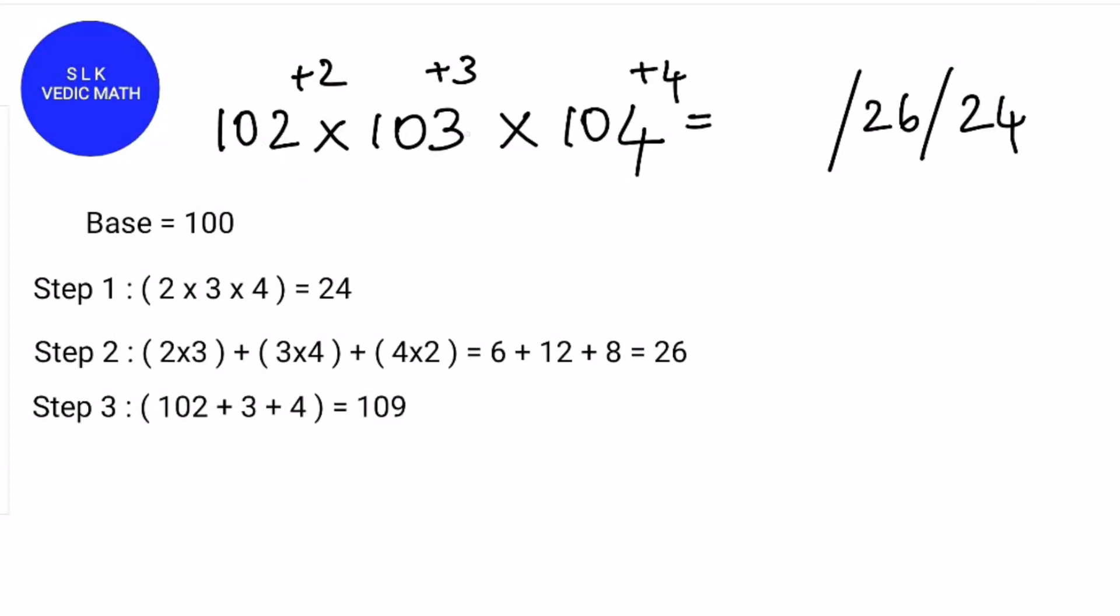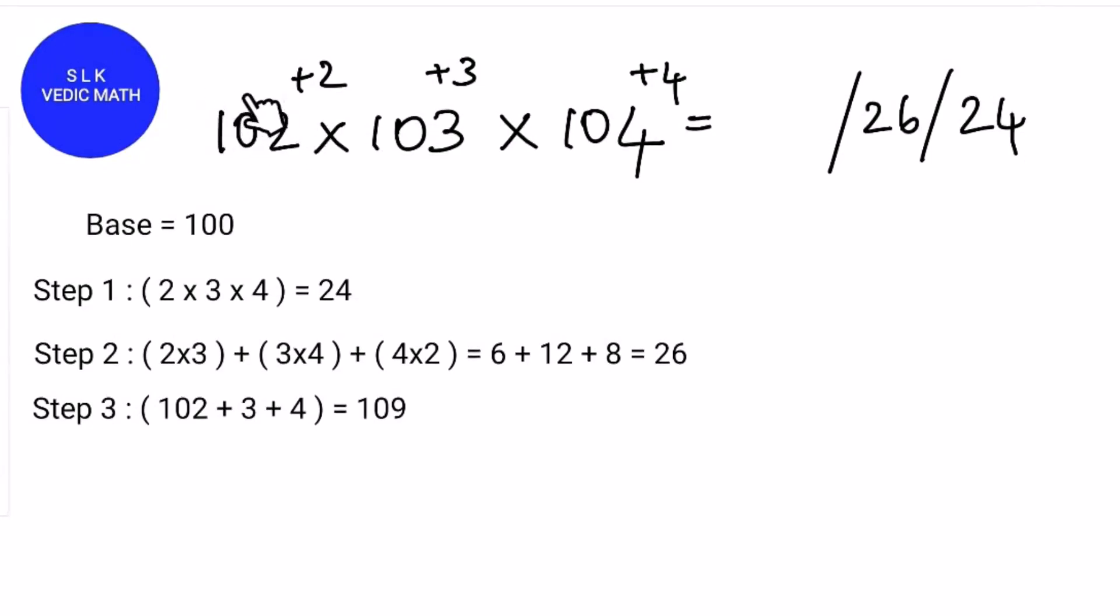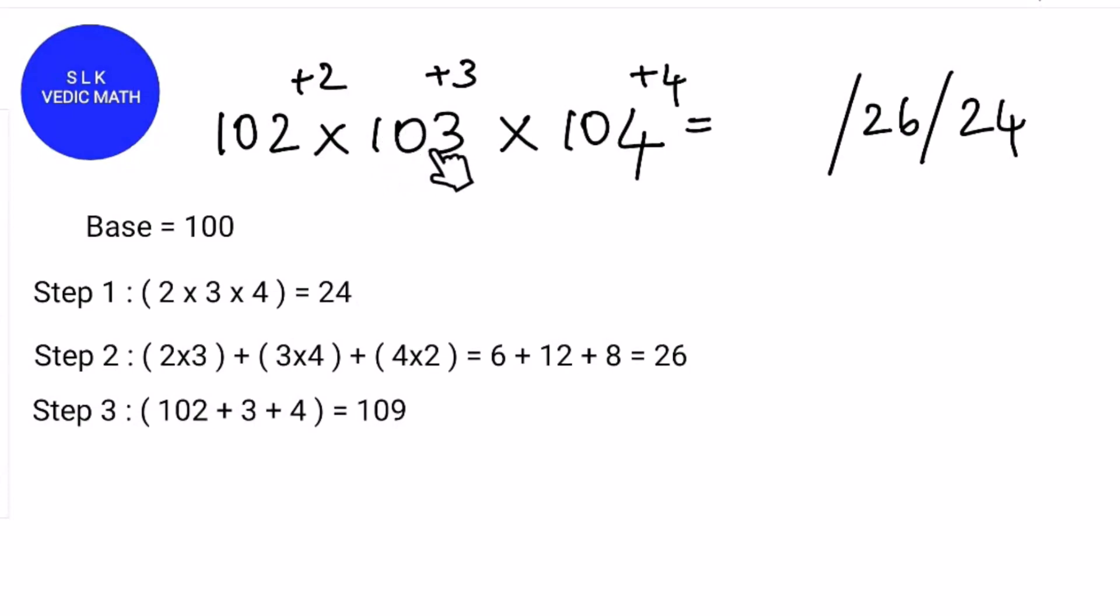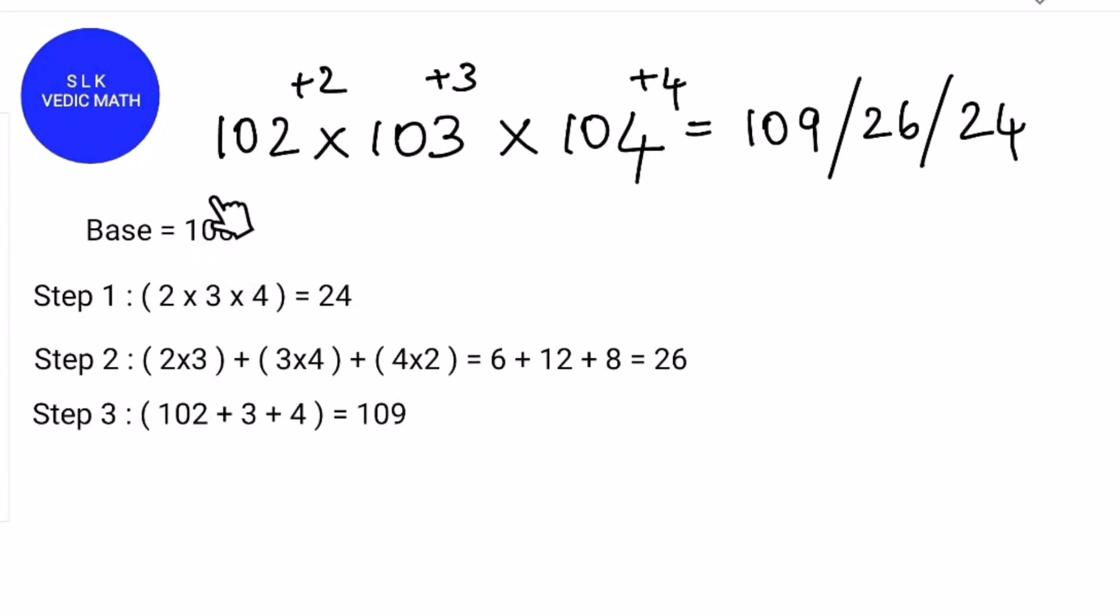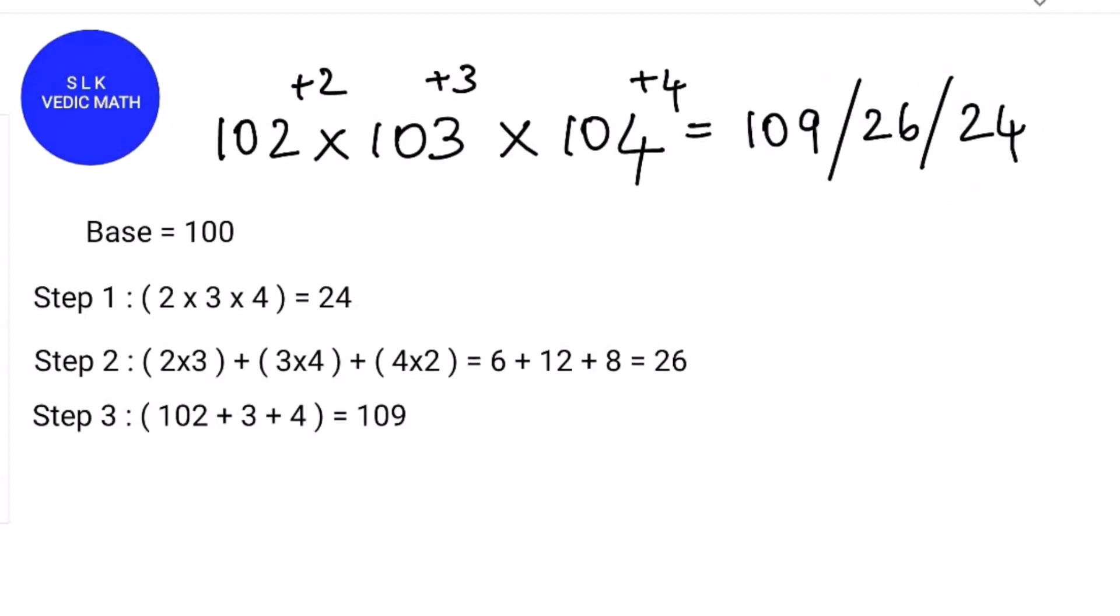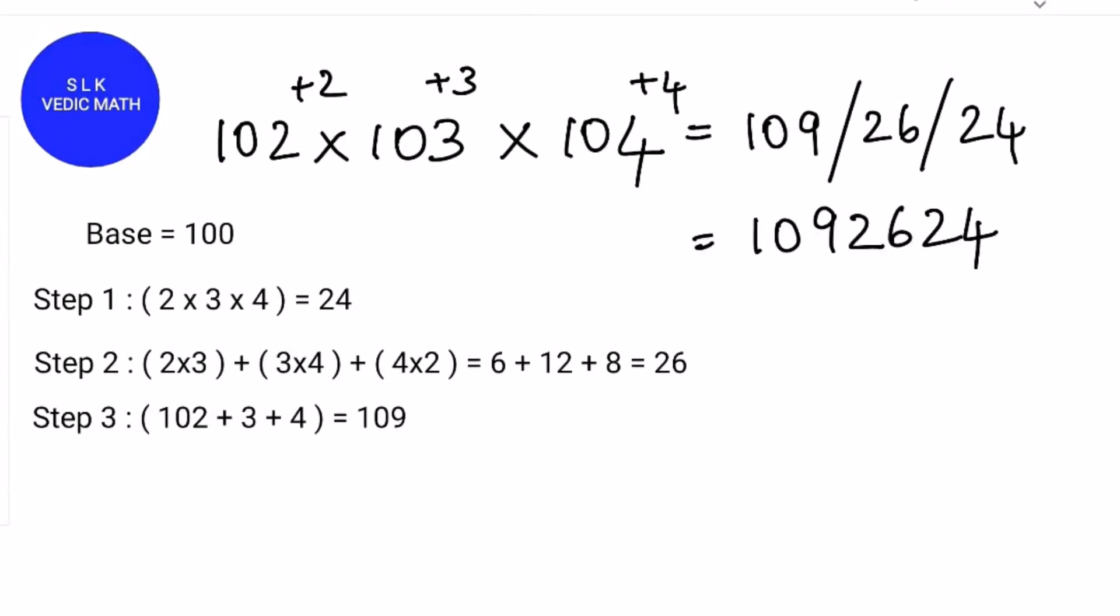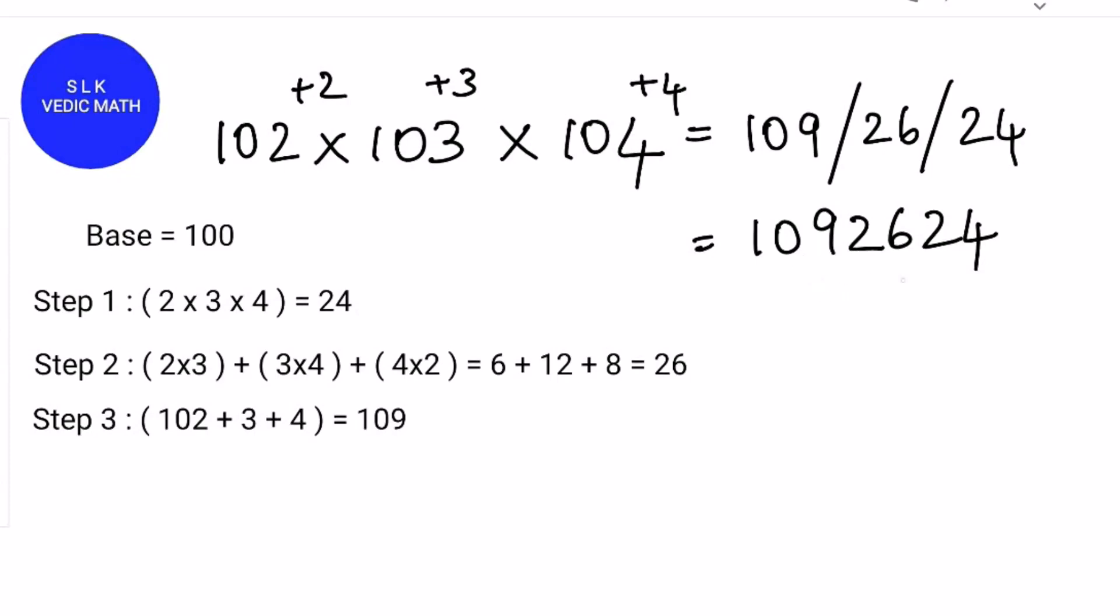Next pick a number: 102, 103, or 104. I will pick 102. So add 102 + 3 + 4 which gives 109. If you pick 103 we add 103 + 2 which is 105 and 105 + 4 which is also 109. So write 109 over here. Now the base is 100, so there are two zeros. So each part has two digits except the first part. So we don't need to carry anything. So 102 × 103 × 104 is 1092624.